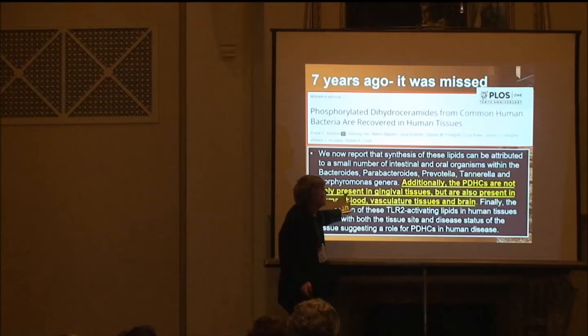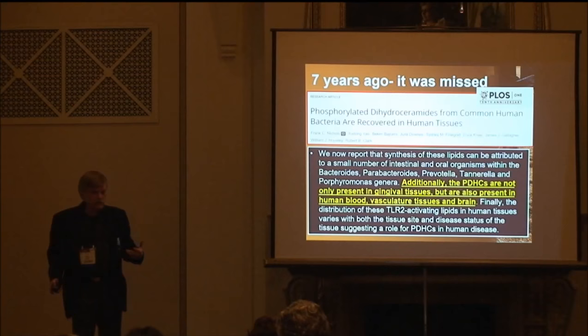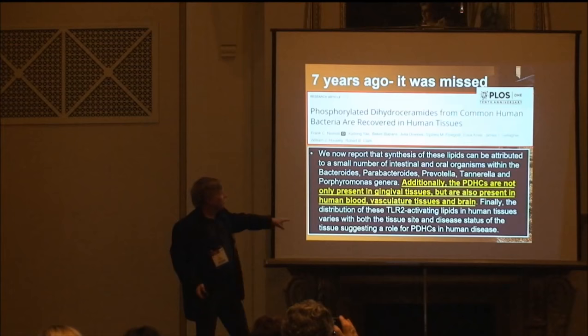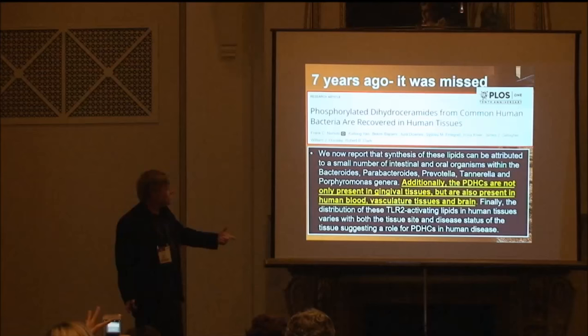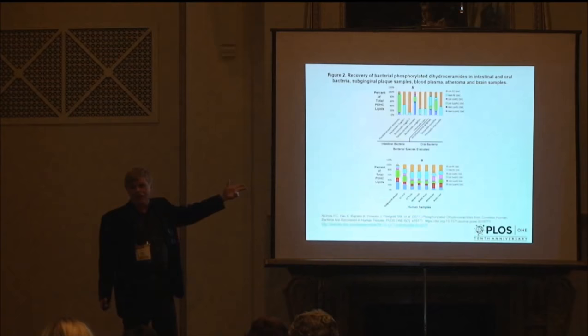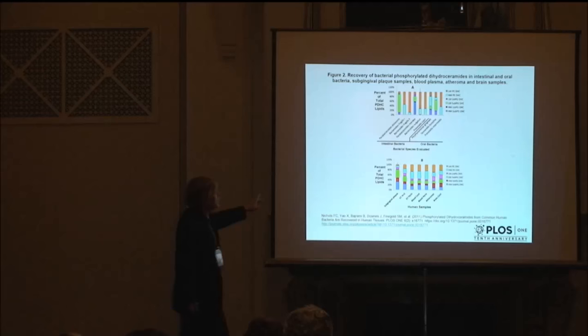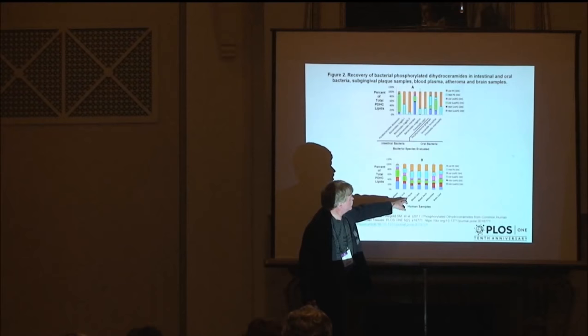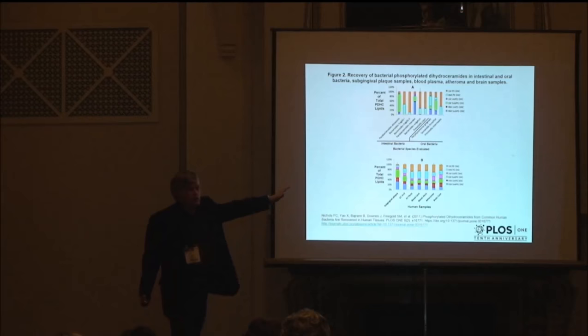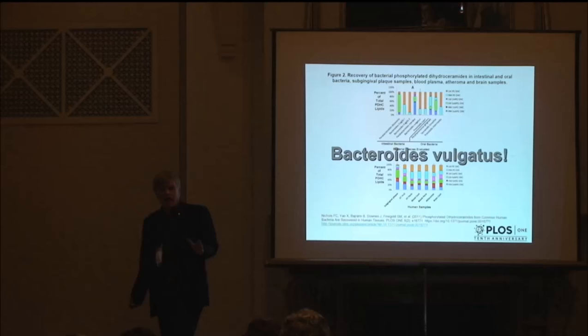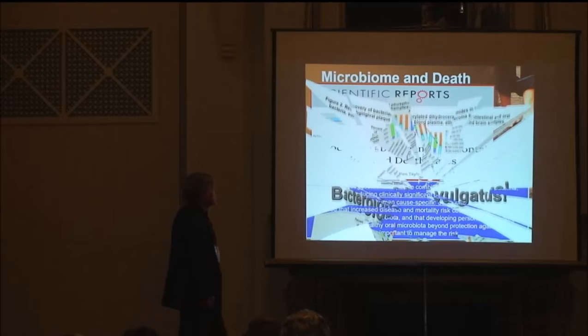Published in Public Library of Science, the pdhcs — phospholidohydroceramides — give virulence to the bacteria. They come from pathogens and are found in your bloodstream, vascular tissues, and brain. The pathogens produce these pdhcs, causing immune and autoimmune disorders, and you can track them precisely. The study looked at gingival tissue with periodontal disease, blood counts, and brain tissue. Bacteroides vulgatus is one of the bacteria implicated in autism, causing chronic brain inflammation. This is published in Scientific Reports — there are very strong associations between periodontal microbiota and death rates.